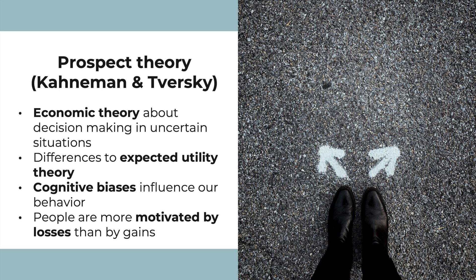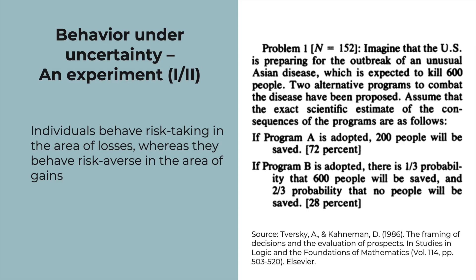This might sound very abstract, so let's look at concrete examples. The theory argues that frequent cognitive biases influence behavior under uncertainty. In particular, people are said to be more motivated by losses than by gains, and thus invest more energy in avoiding losses than in achieving gains. So individuals behave risk-taking in the area of losses, whereas they behave risk-averse in the area of gains.